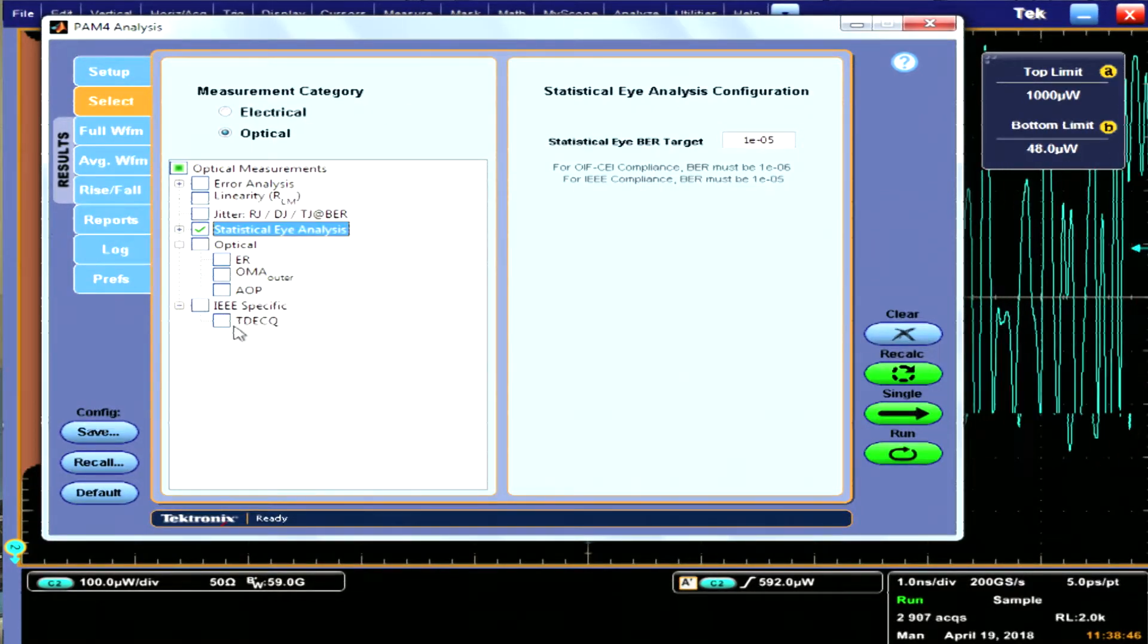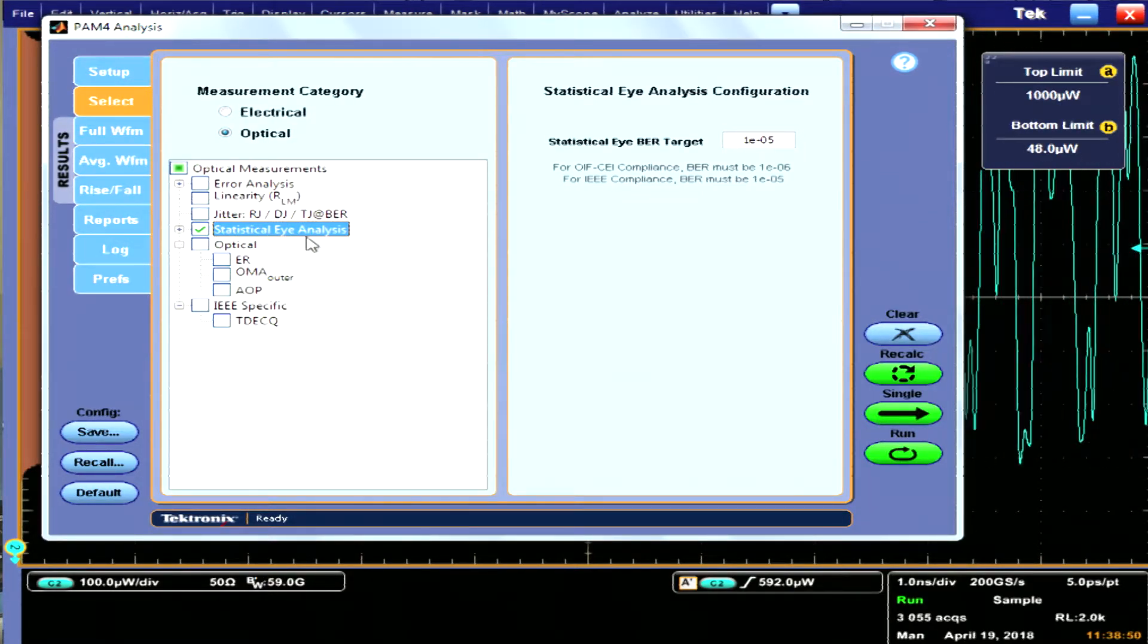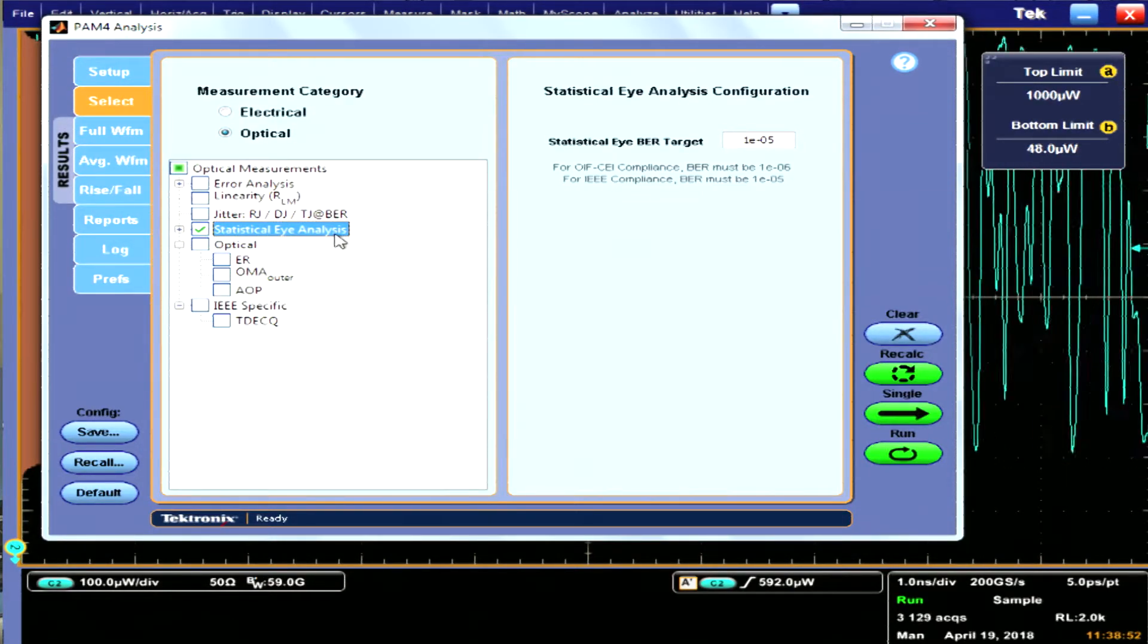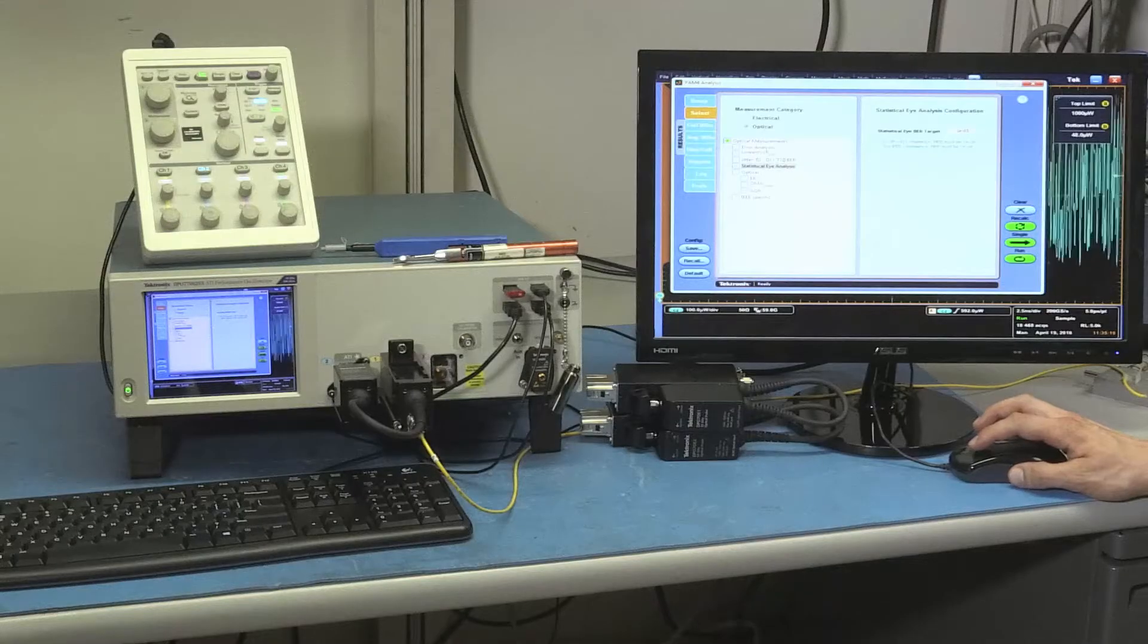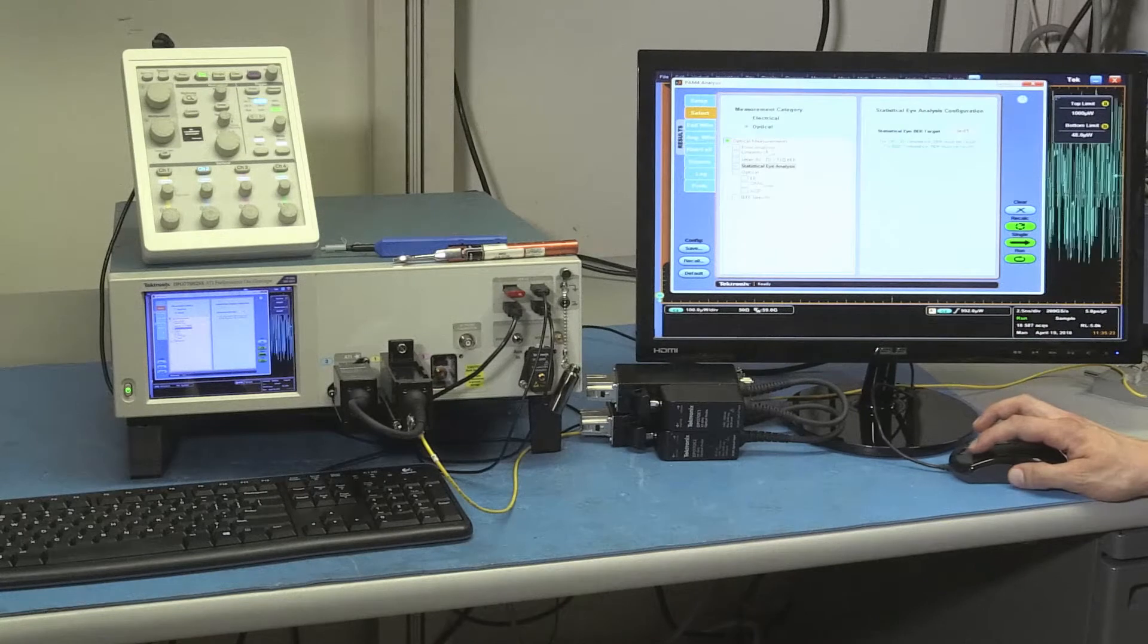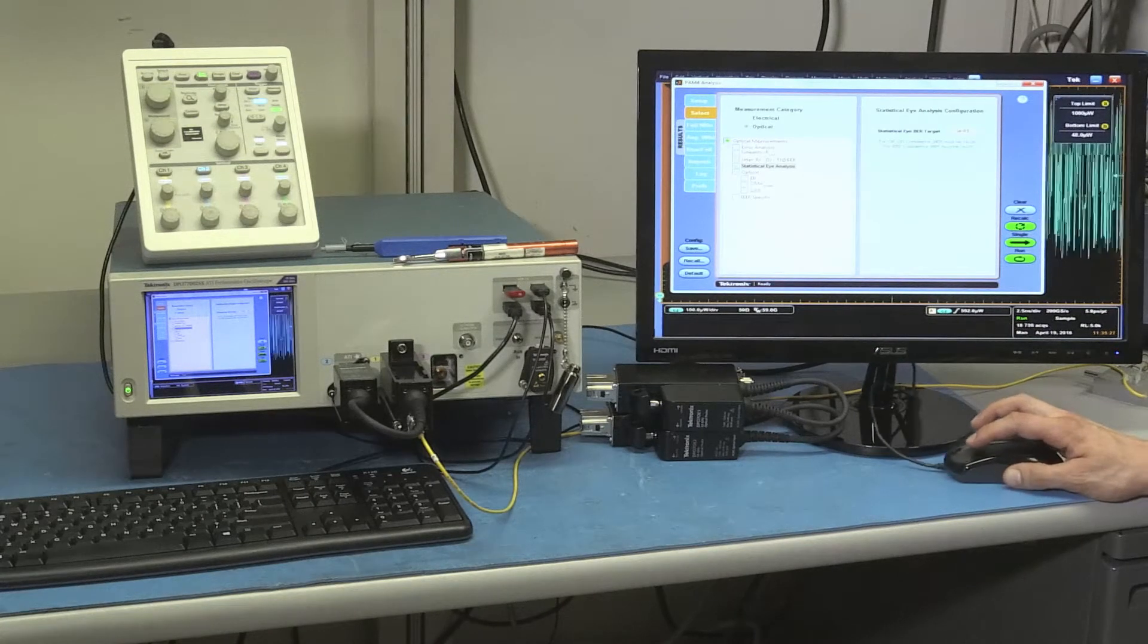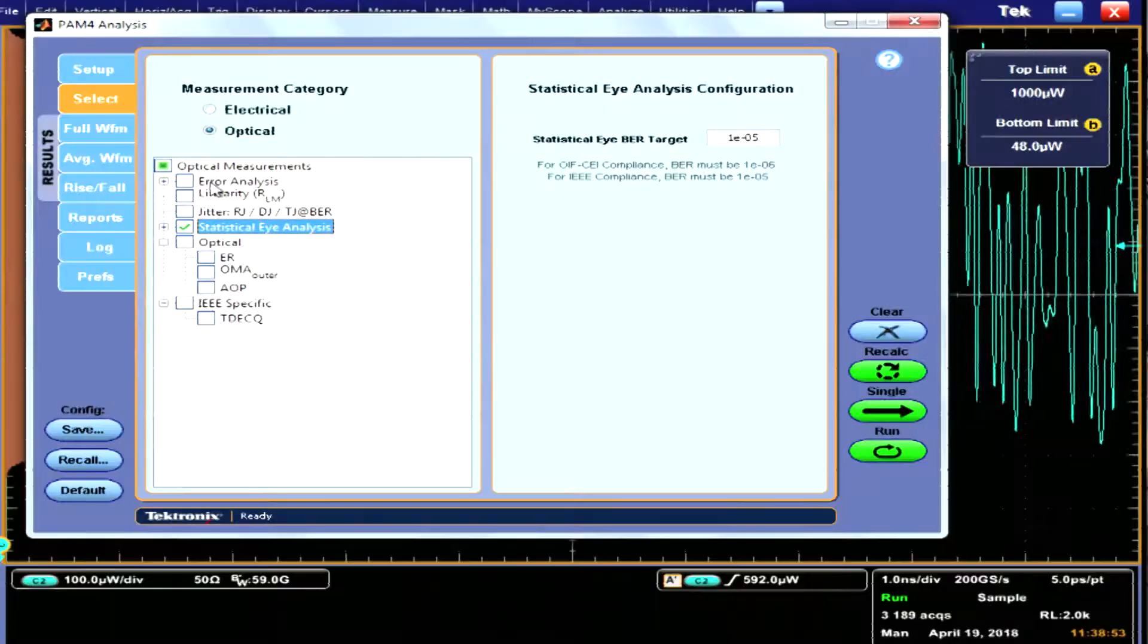So this is the PAM4 analysis option. You have electrical as well as optical measurements that you can do. Right now we are focusing on the optical measurements. I just have the statistical eye analysis turned on. If you want to turn other measurements on you can basically choose and pick what you like. So it's very flexible that way.